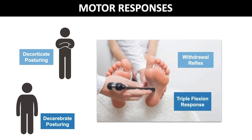Withdrawal from a painful stimulus indicates there is a localizing motor response. In contrast, triple flexion is a spastic spinal reflex where there is dorsiflexion of the ankle, knee, and hip following cutaneous stimulation. Unlike a withdrawal reflex, with a triple flexion response, the patient will often relax while the painful stimulus is still present.